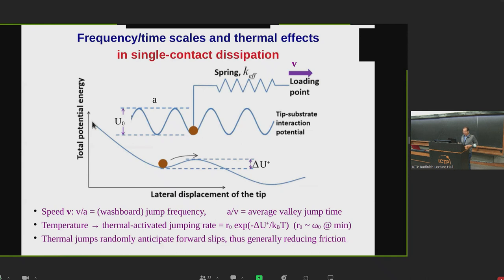What are the different time scales here which play a role? There is a washboard frequency, which is the ratio of the advancing speed to the lattice spacing, and its inverse, which is the time between one minimum and the next. Then there is a temperature-related time scale, which is the product of some attempt rate time, this exponentially scaled ratio of the barrier energy delta U plus to the thermal quantum. These thermal jumps will anticipate forward slips, and the higher the temperature, the higher this jump rate, at the point that even though one might be in a stick-slip situation, if temperature is large enough, eventually the system just advances essentially smoothly.